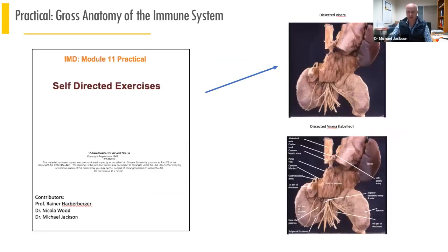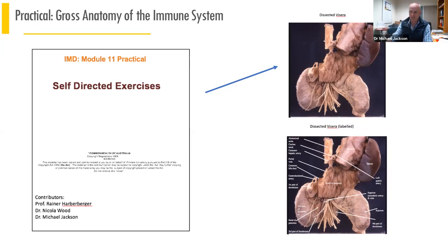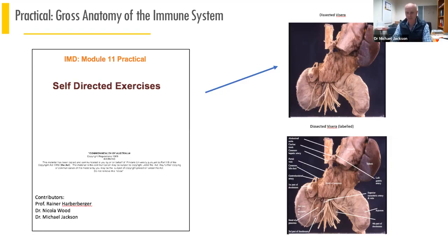The gross anatomy practical examines the various components of the immune system and how interlaced they are with other body systems — particularly the gastrointestinal and respiratory tracts, where immune cells are concentrated in lymphoid tissues and lymph nodes.